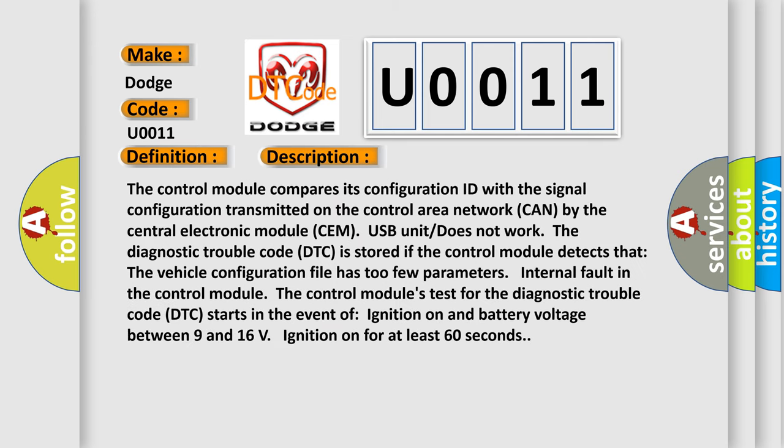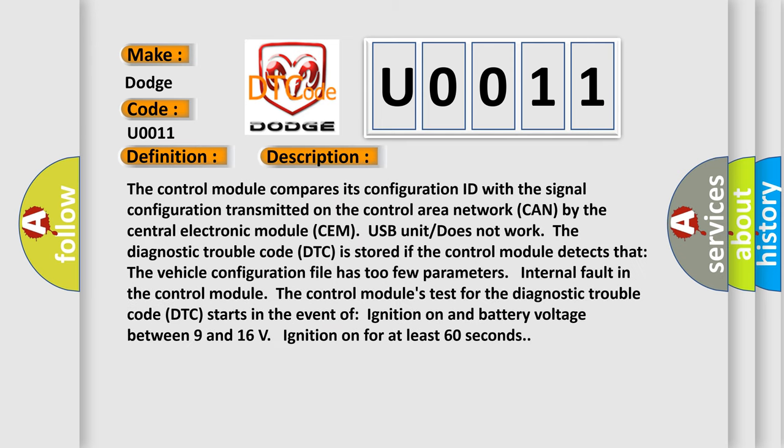The basic definition is: Control Module System Programming Failures. The control module compares its configuration ID with the signal configuration transmitted on the Controller Area Network (CAN) by the Central Electronic Module (CEM). The USB unit does not work. The DTC is stored if the control module detects that the vehicle configuration file has too few parameters, or there is an internal fault in the control module. The DTC test starts upon ignition on, with battery voltage between 9 and 16 volts, and ignition on for at least 60 seconds.